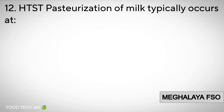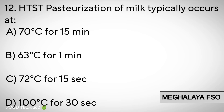Question number twelve. HTST pasteurization of milk typically occurs at: A. 70°C for 15 minutes, B. 63°C for 1 minute, C. 72°C for 15 seconds, D. 100°C for 30 seconds.